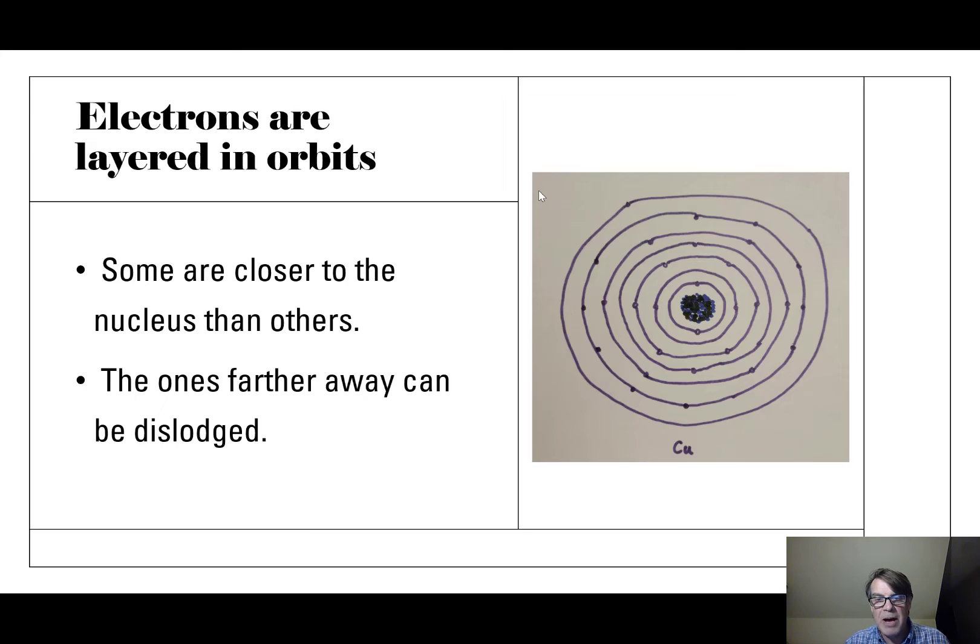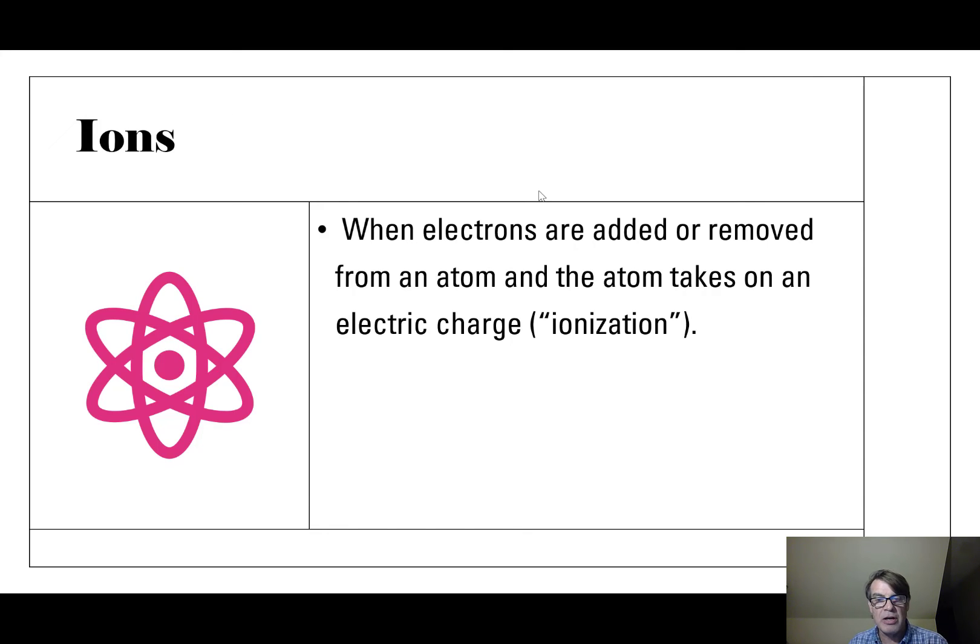So this process of becoming an ion is called ionization. When electrons are added or removed and it takes on electric charge, it becomes an ion.